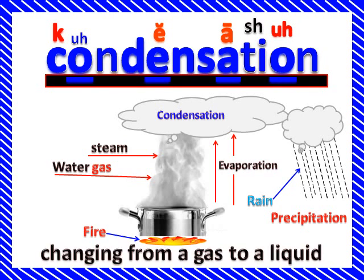Condensation is changing from a gas to a liquid. You see the pot there with the fire under it — the pot has water in it. When the water boils, it turns to a water gas, which is steam. It evaporates into the air and gets into the clouds. When it gets into the clouds, it turns back from a gas to water through the condensation process.